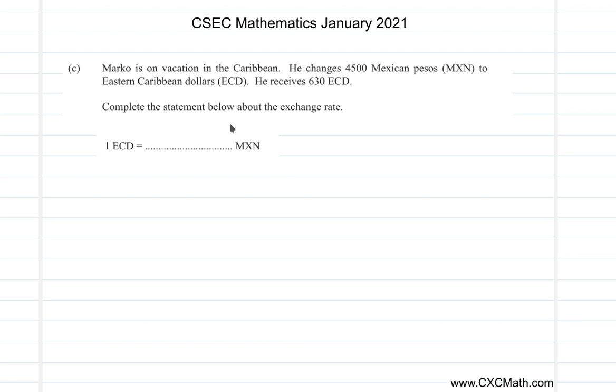I already copied it over here. So, let's see. He's on vacation in the Caribbean. You have 4,500 Mexican pesos. He receives 630 Eastern Caribbean dollars. So, one Eastern Caribbean dollar is equal to what? Pause the video and work it out for me.